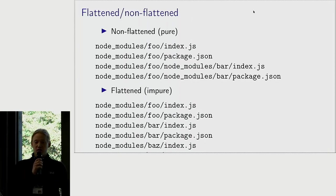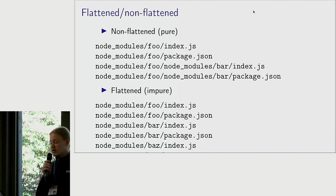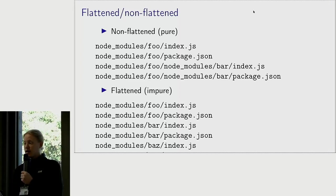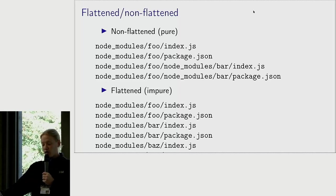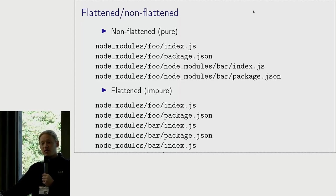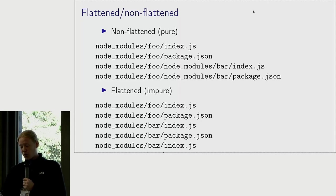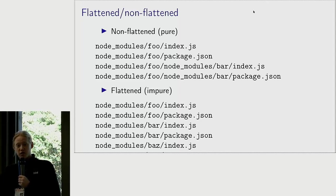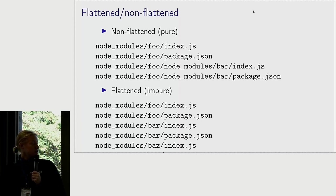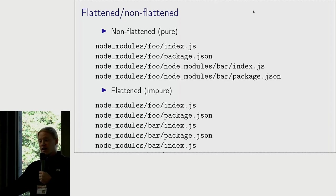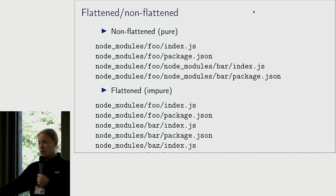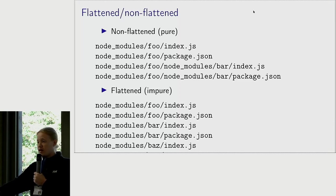The different Node.js package managers do different things in terms of flattening — flattening meaning flattening the dependency graph into a single level of dependencies. Node.js tries to solve the issues of deep nesting, which doesn't work well on Windows, by doing this, along with some other aspects which make deep nesting not work very well. The sad thing about this flattening is that it results in impurities: if you have a flattened dependency tree, anything can require anything, despite what is specified in the dependency specification.